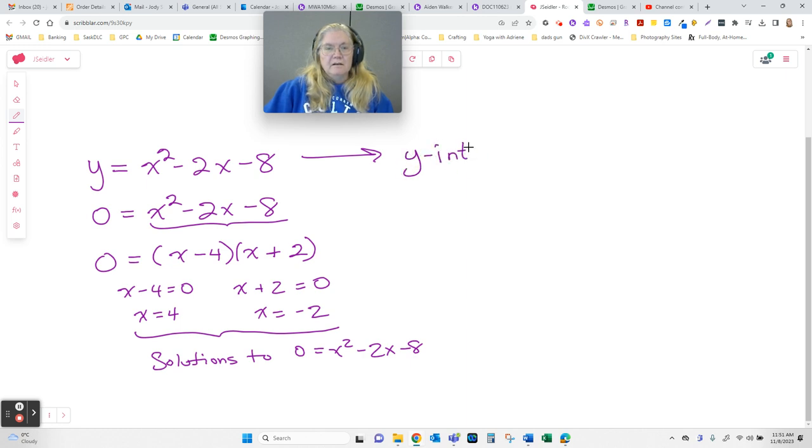These are solutions to that equation 0 = x² - 2x - 8. This function has x-intercepts at 4 and negative 2.